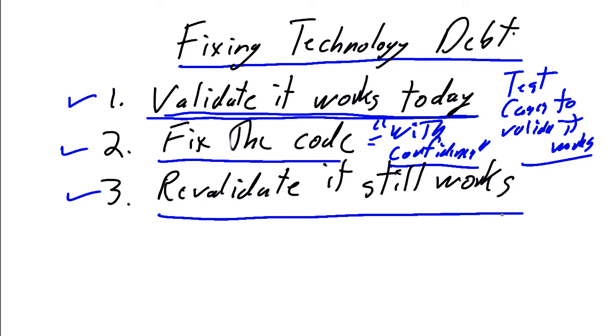And again, hopefully you have the automated build and the automated testing processes in place, in which case revalidating it still works is you check it into your configuration repository, the automated build works, and you still have a green light. If you don't, then you dust off the test cases you just produced, you rerun them, and again, you revalidate it that the code still works.